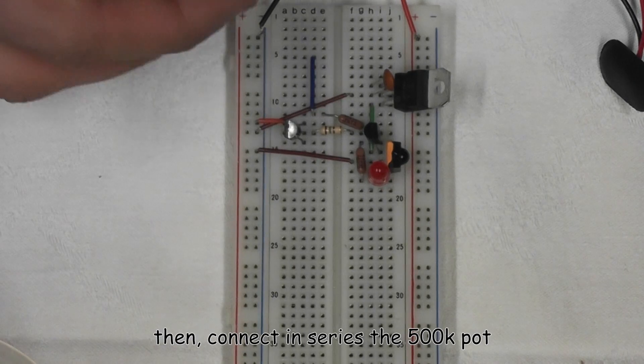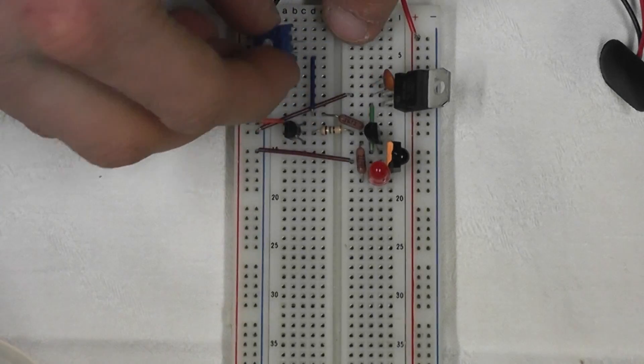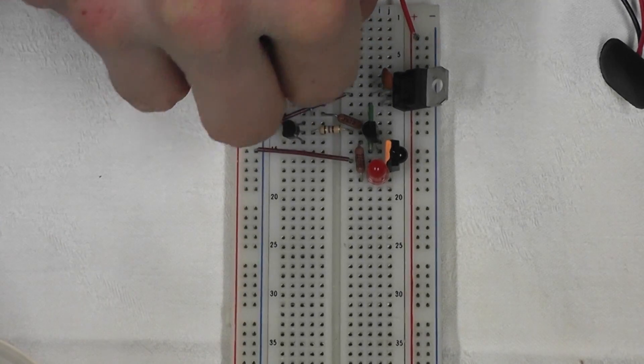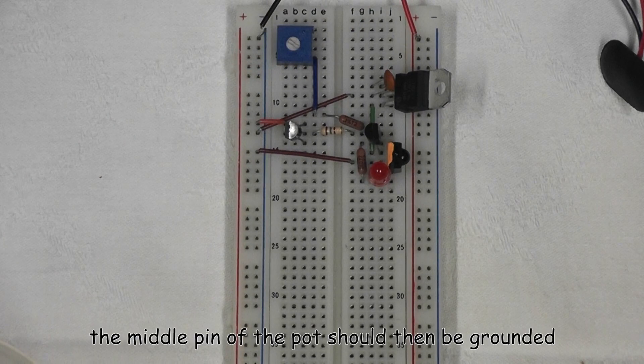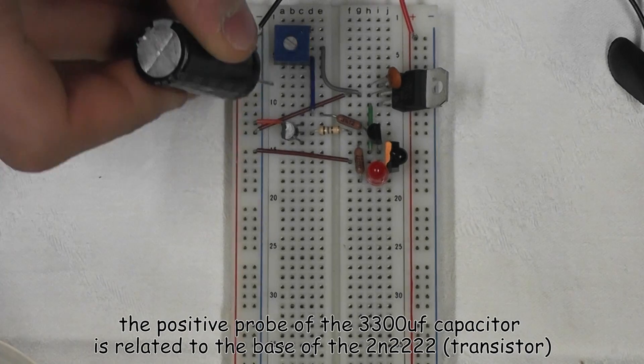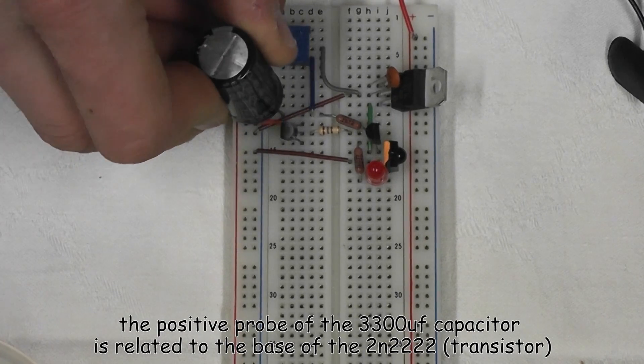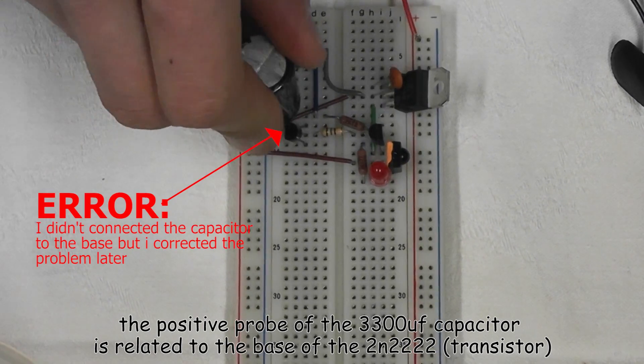Then connect in series the 500K pot. The middle pin of the pot should then be grounded. The positive probe of the 3300 microfarad capacitor is related to the base of the 2N2222.